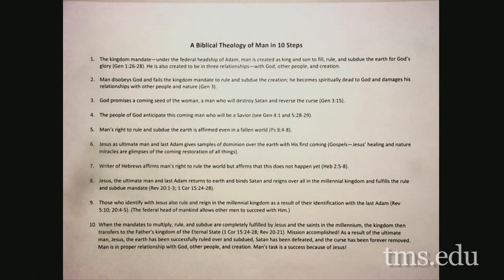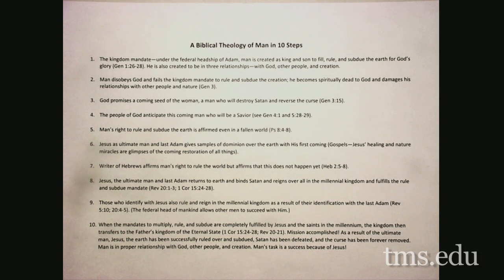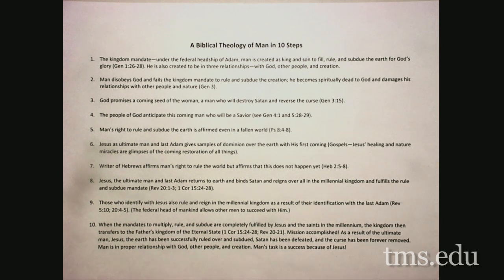So that's the first part of the story. There is a charter, a mandate — this is what man is supposed to do, centered in the assumption that as a creature he does this to honor the creator, not just for his own desires. That brings us to the second step: man disobeys God and fails the kingdom mandate to rule and subdue the creation.